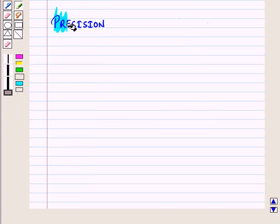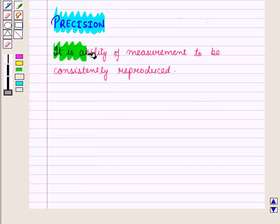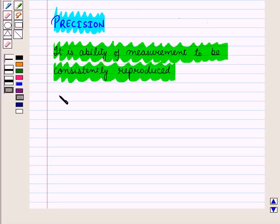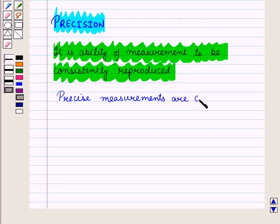Now let us discuss precision. It is a rating of measurement to be consistently reproduced, and precise measurements are close to each other.